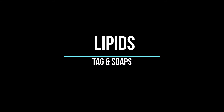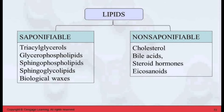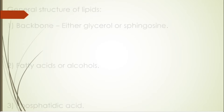Hey guys, it's Layla. Today I'll speak about lipids, about diacylglycerols and soaps. Lipids are split into saponifiable and non-saponifiable. Saponifiable lipids include triacylglycerols, which are oils in liquid form, glycerophospholipids, and biological waxes. For non-saponifiable lipids, you have cholesterol, bile acids, eicosanoids, etc.